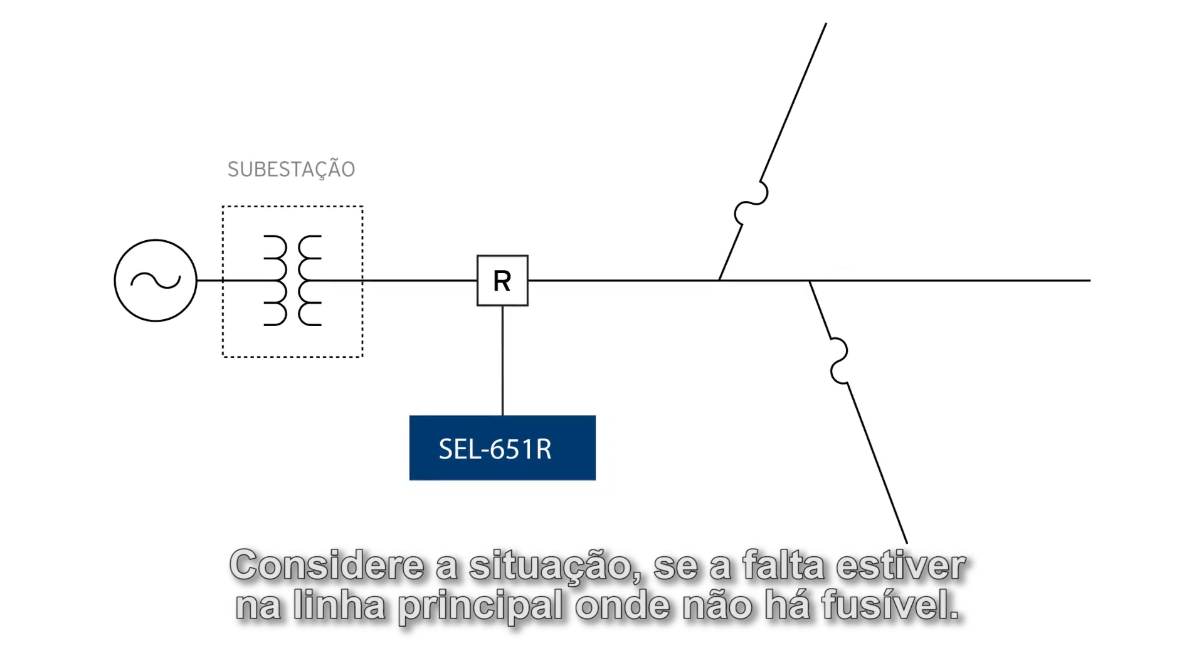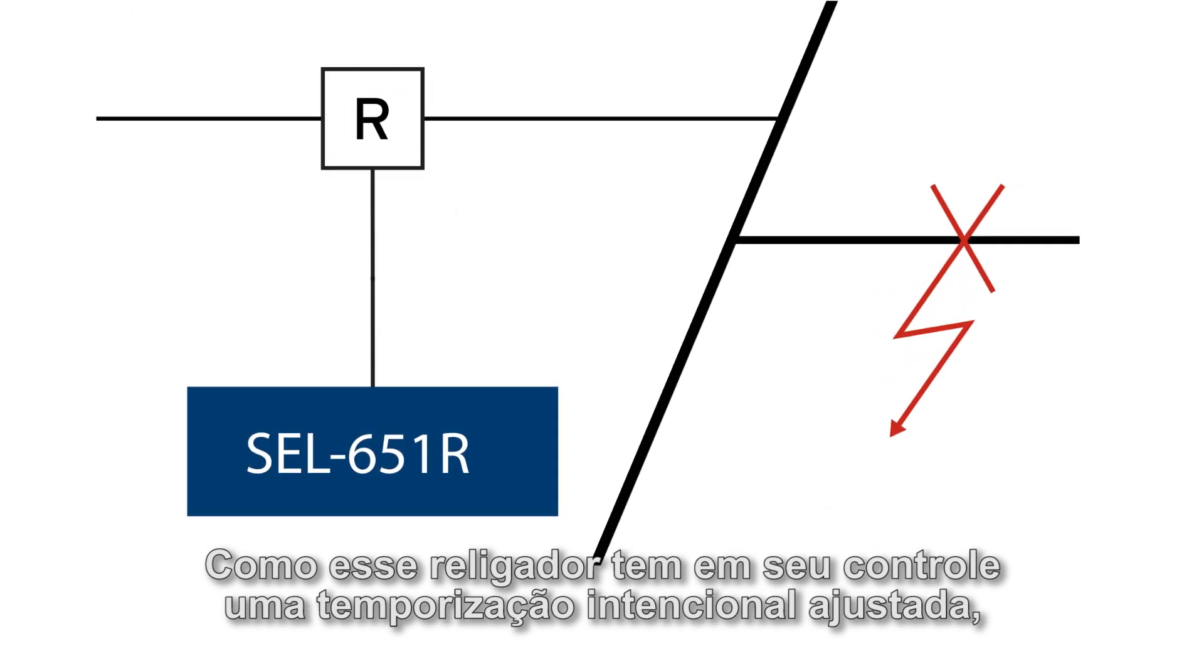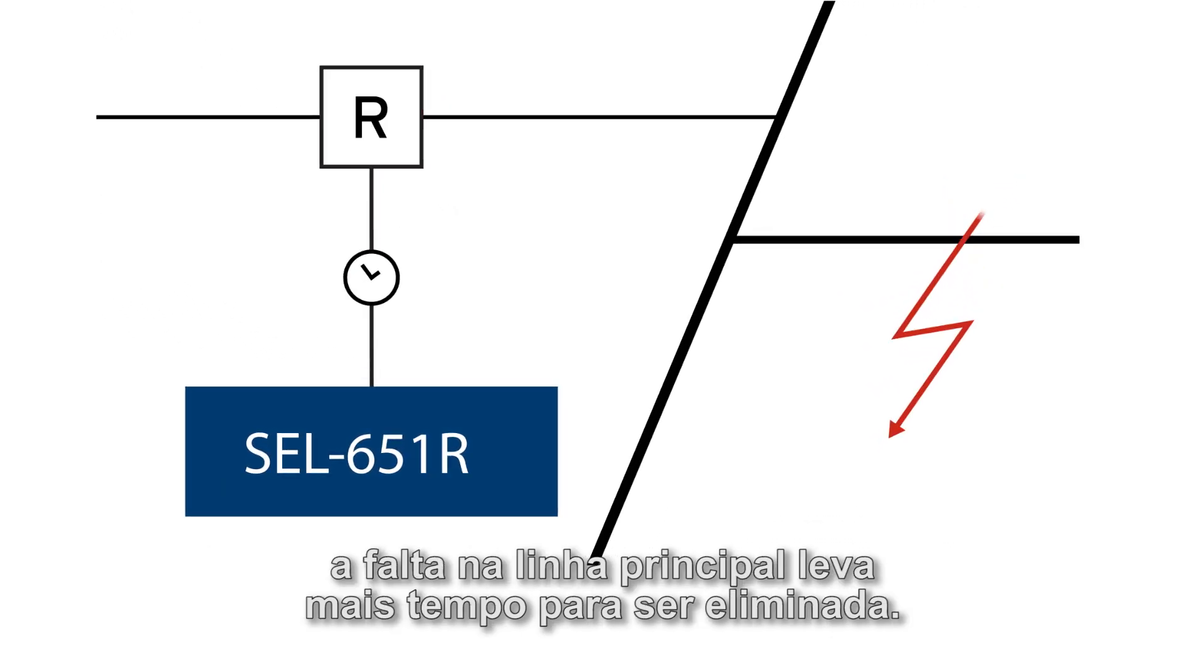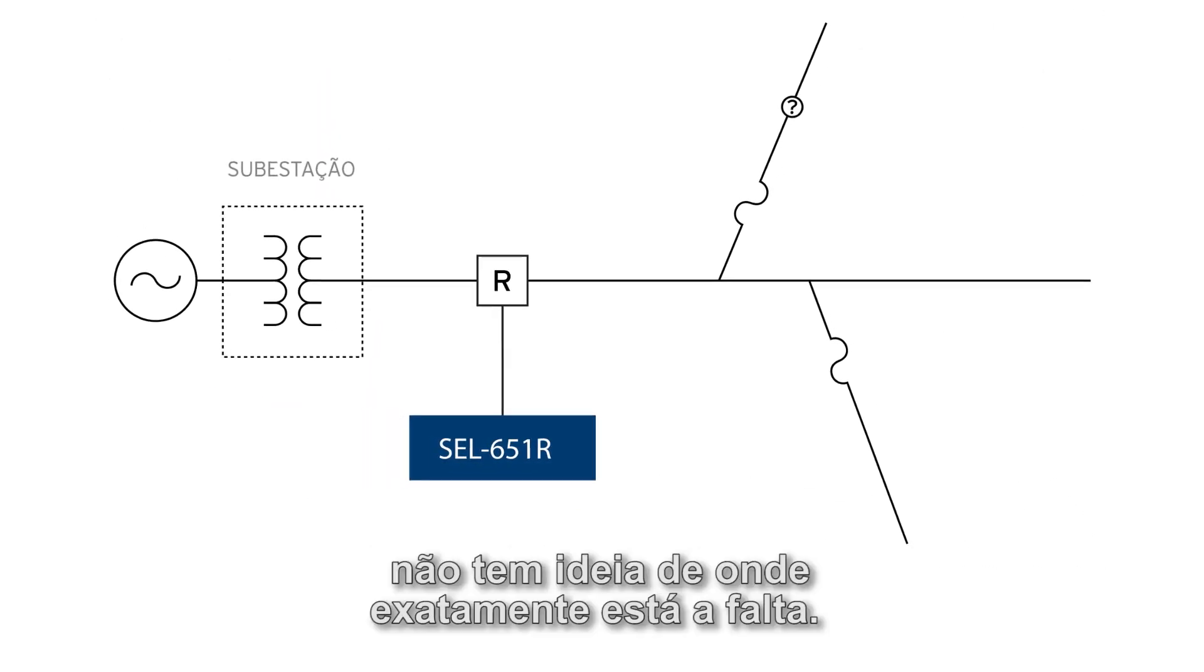Now consider the situation if the fault is on the mainline where there's no fuse. Because this recloser and the recloser control have built-in delay, the fault on the mainline takes longer time to clear. This is due to the fact that the recloser control has no idea where exactly the fault is.